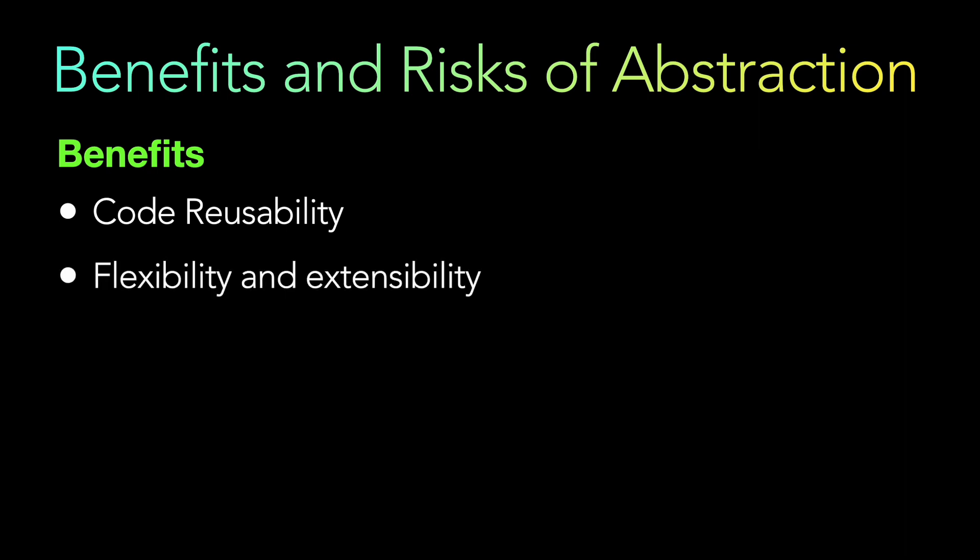Next is flexibility and extensibility. Abstraction allows flexibility in the code — new classes can be easily added by implementing an existing interface. For example, you can implement a Dog class or a Cat class as we saw, and the contract — the interface — is already provided to you, so it is easier.